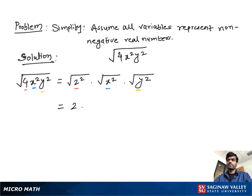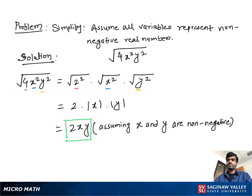Then we write 2 times absolute value of x times absolute value of y, because x and y may be negative, so we take the absolute value. We can write 2xy assuming x and y are non-negative.